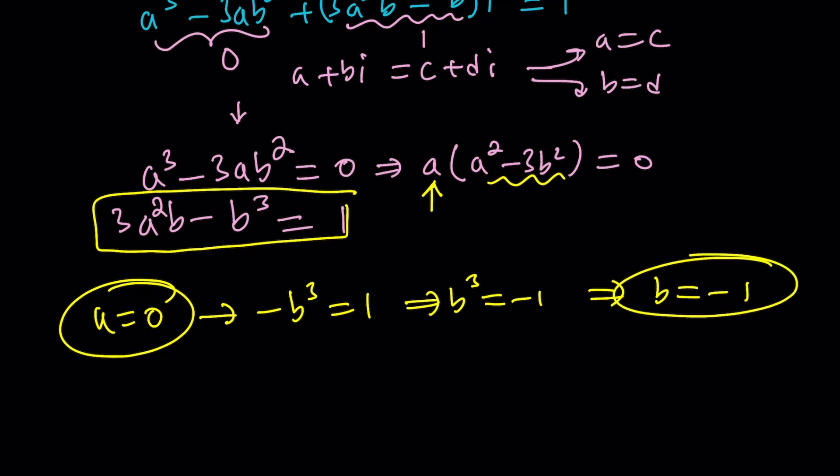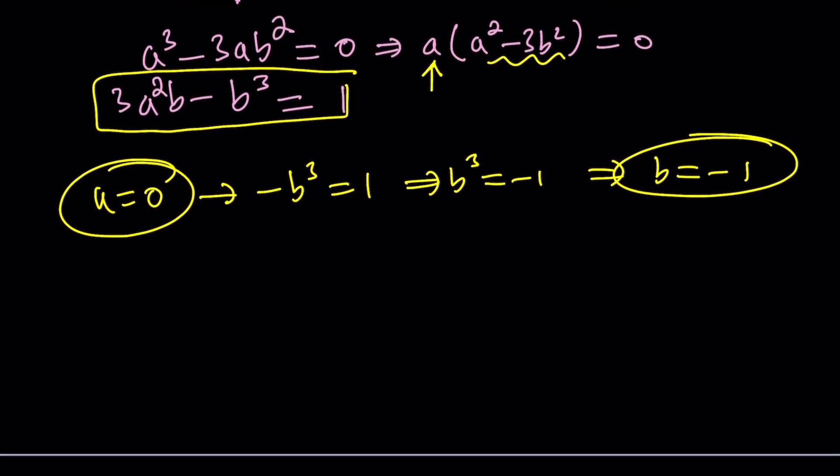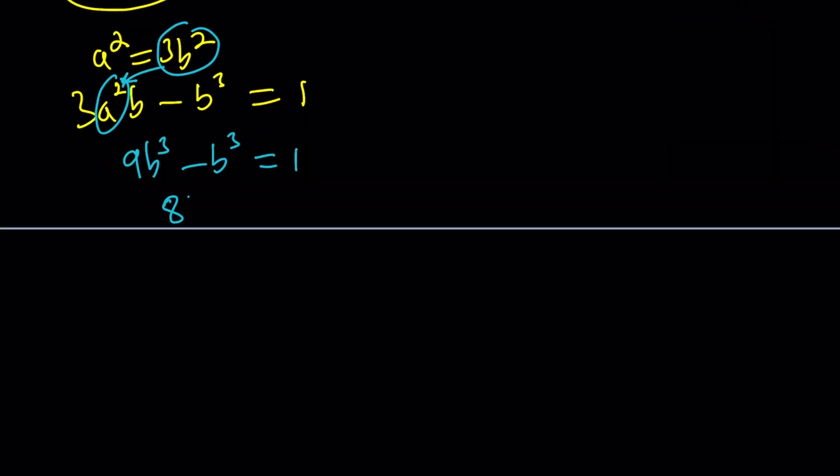Let's go ahead and take a look at the second factor that comes from the first equation. That is A squared minus three B squared equals zero or A squared equals three B squared. Now you don't get a value from here, but you can use this in the second equation by way of substitution. So if you replace A squared with three B squared, you get three times three B squared is nine B cubed minus B cubed equals one. And that is eight B cubed equals one, so B cubed equals one over eight, so B equals one over two.